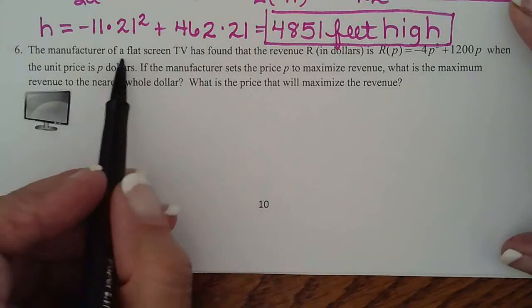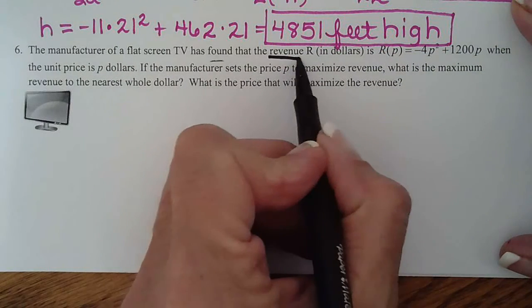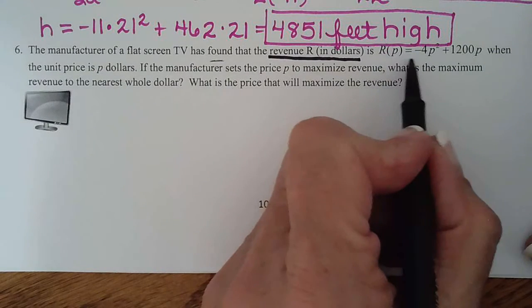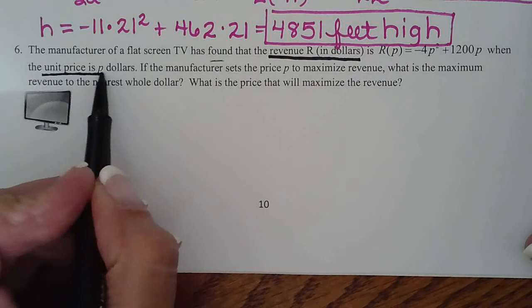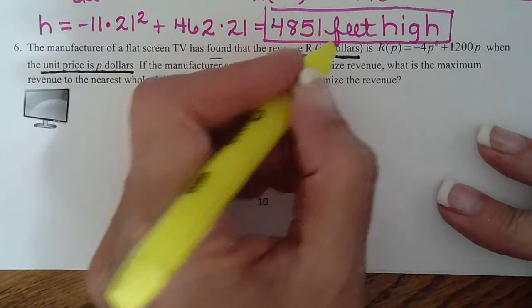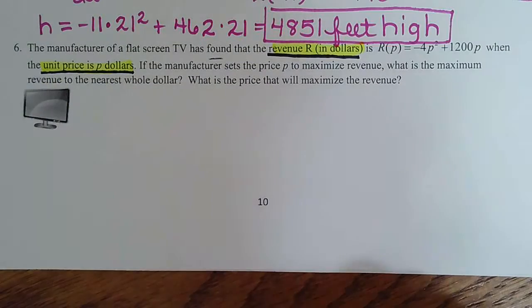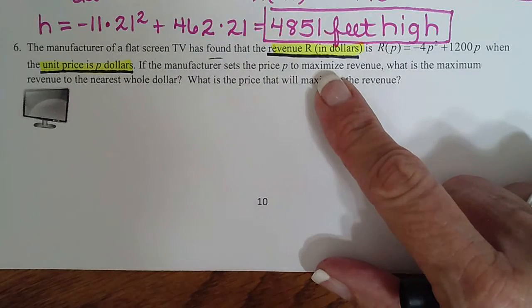Okay, a manufacturer of a flat screen has found the revenue R in dollars - so there's your first important bit of information - is given by this equation when the unit price is p dollars. That's important, so let's go ahead and highlight those because we know those are the big things with their labels.